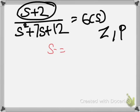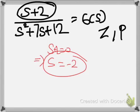Setting s + 2 = 0 gives s = -2. So -2 is the zero of the transfer function.